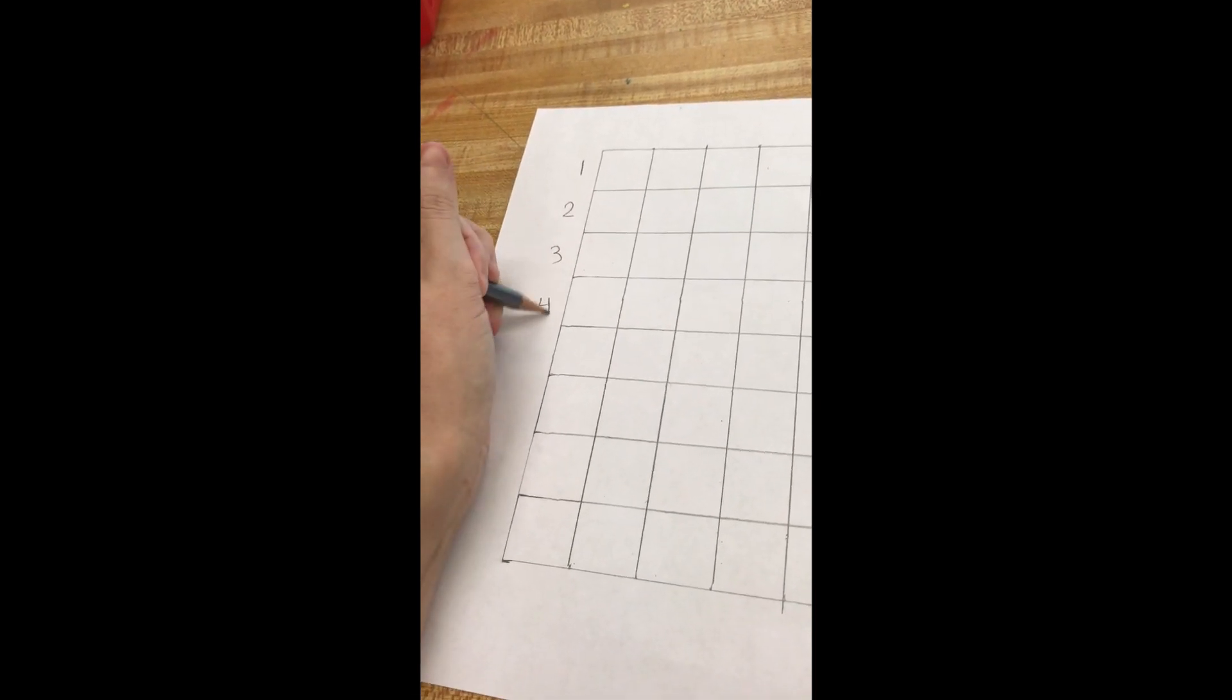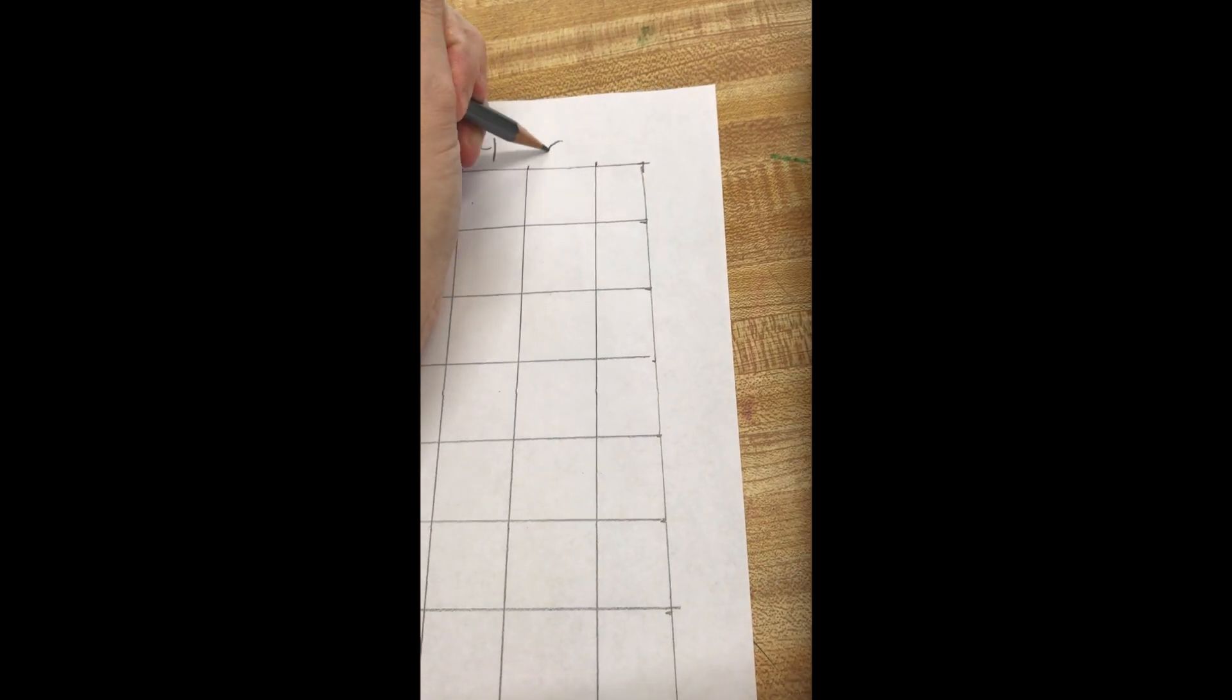So after you've created your own grid drawing, let's make it easier by putting some numbers next to it. 1, 2, 3, 4, 5, and 6.